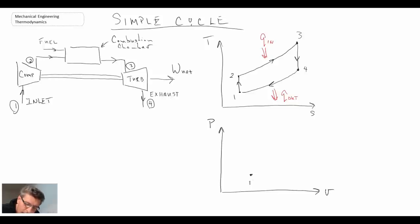We'll start down here at state one. We then go into isentropic compression, which takes us up to state two. So during isentropic compression, entropy is constant.